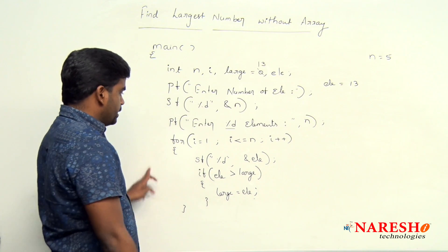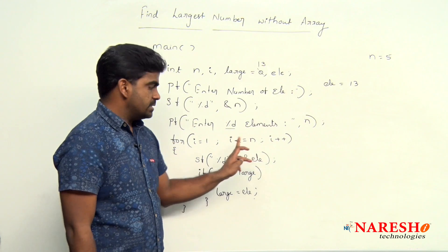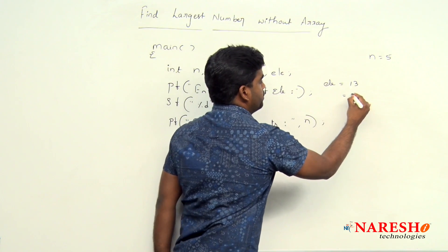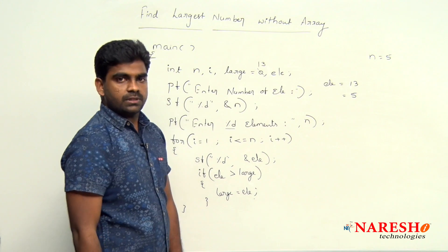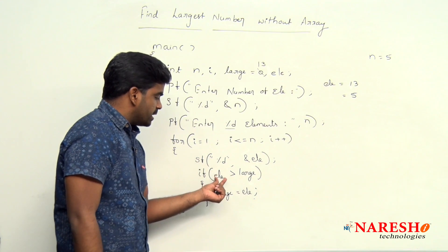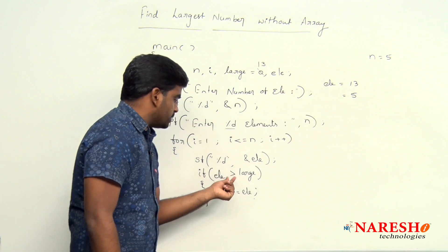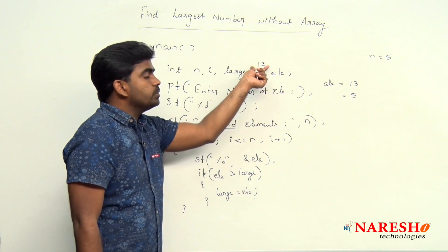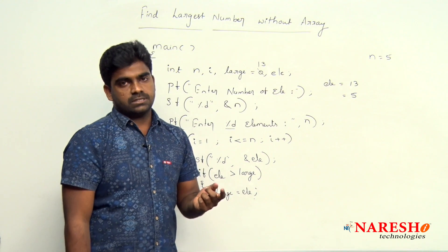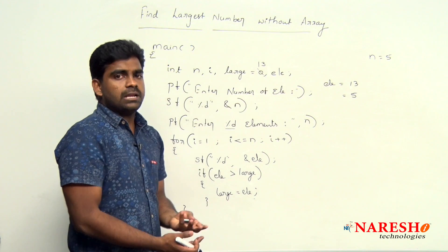After if block, again for loop will be repeated. I value become 2, second element we are reading. Suppose second element is 5. When the control come inside after reading, element is 5, the new element is 5, greater than what is that largest value 13? 5 greater than 13, condition false. So if block will not execute because second one is not the largest one.